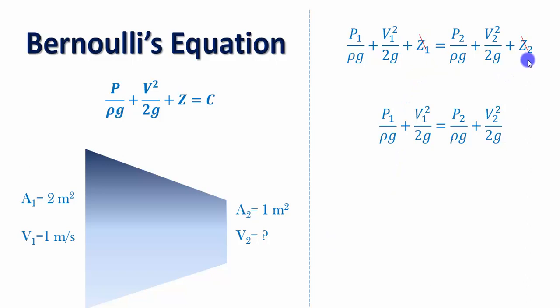z1 and z2 can be cancelled out. If we cancel out these z terms, we will be left with these things. Now let us substitute the value of velocity at the inlet. Let us assume the pressure at the outlet as 0, so that we can calculate the pressure at the inlet. Now this term will become 0. We want to calculate the pressure at the inlet.